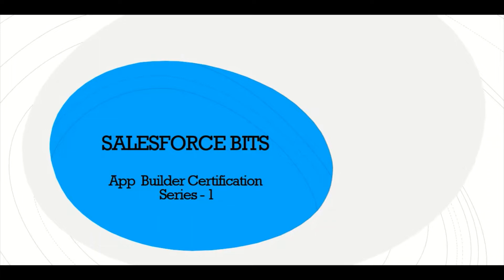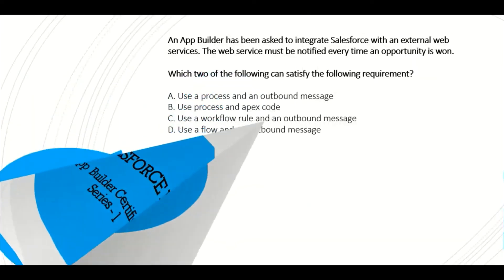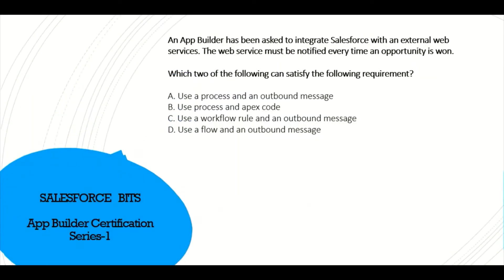The first question: an app builder has been asked to integrate Salesforce with an external web service. The web service must be notified every time an opportunity is won. Which two of the following can meet the requirement? The options are: use Process Builder and an outbound message; use Process Builder and Apex code; use Workflow and an outbound message; and use a Flow and an outbound message. The correct answer seems to be B and C — let's go ahead and validate this.